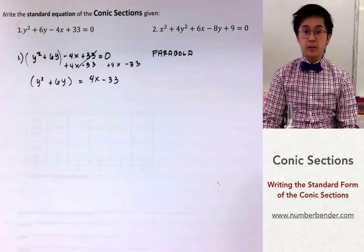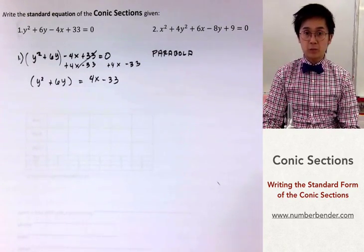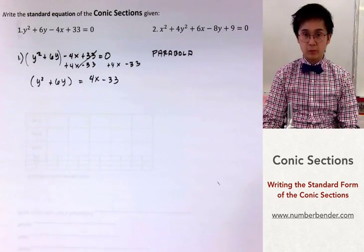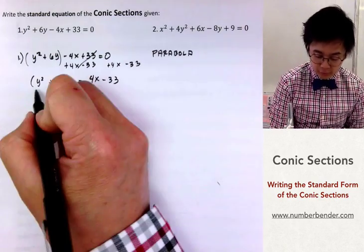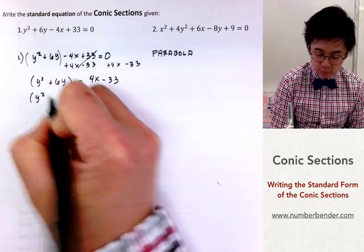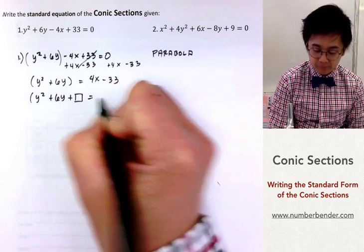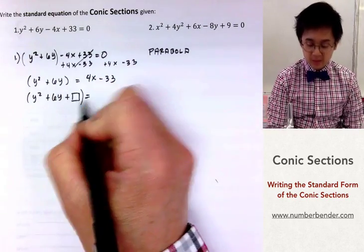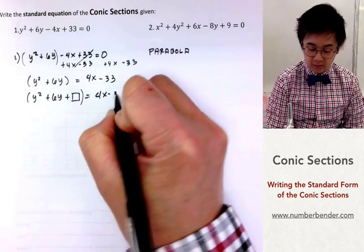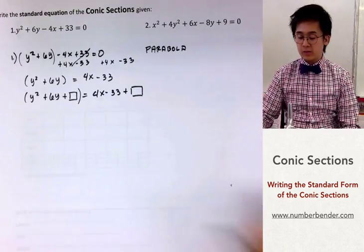From this point we can now perform the completing the square technique so we can produce a perfect square trinomial. For this group we'll have y squared plus 6y plus a box. And whatever we did on this side we're going to add it on the other side as well.